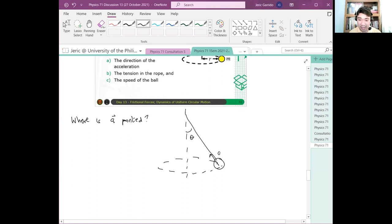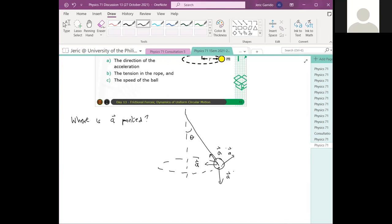So dito ba sa direction na ito yung A? Dito ba pababa yung A? Dito ba pumunta dito yung A? Palabas ba yung A? Nasaan? Saan yung direction dapat ng radial acceleration dyan? This is an important concept when we go to circular motion. Nasaan ang direction ng radial acceleration? Nasaan? This is important.